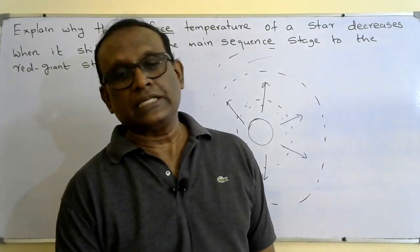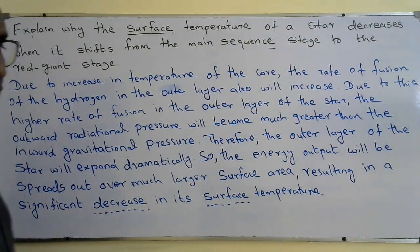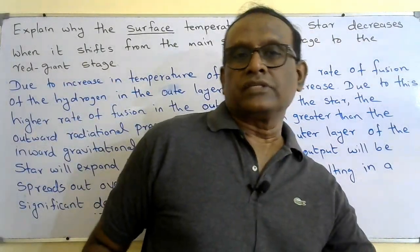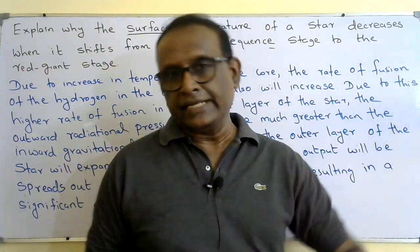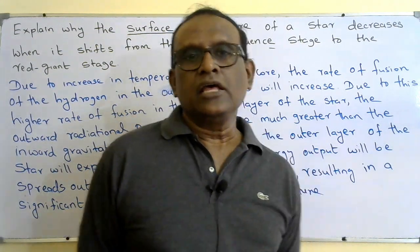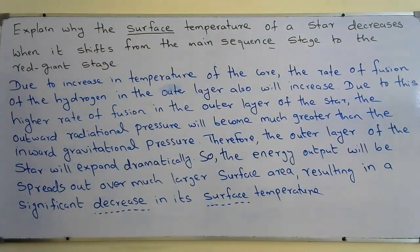That is the answer for why the surface temperature of a red giant decreases compared to when it was in the main sequence. Thank you.